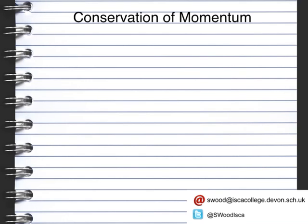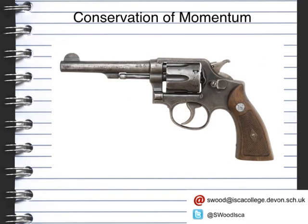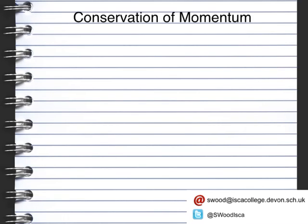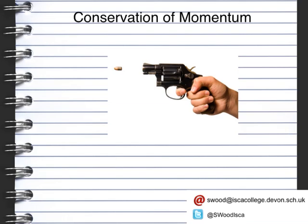The same thing happens with a gun. Here we've got a picture of a gun with bullets in the barrel. The momentum before firing is zero — there is no force going in either direction. When we fire the bullet, there is a force of the bullet going forward. In order to conserve momentum, there is an equal and opposite force going backwards — that's what we call the kickback or recoil of a gun.